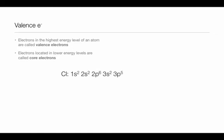As an example, let's look at a couple of elements. We have chlorine, and if we look at chlorine and look at its configuration, we see that the highest energy represented is the third energy level. And in the third energy level, we have two electrons in the s and five electrons in the p to give us a total of seven valence electrons.